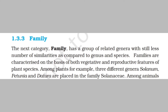The next taxon is family. Family has a group of related genera with still fewer similarities as compared to genus and species. As we go to a higher rank, similarities are lower. Families are characterized on the basis of both vegetative and reproductive features of species. For example, among plants, three different genera — Solanum, Petunia, and Datura — are placed in the same family Solanaceae.